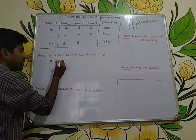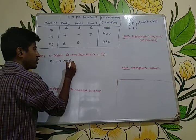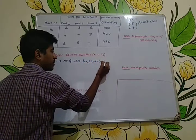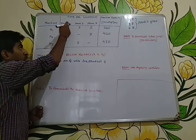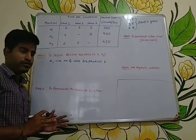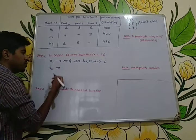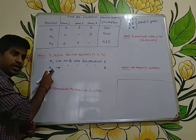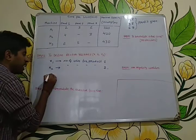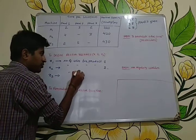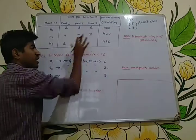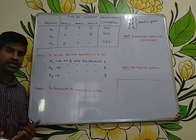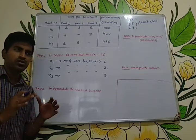Let x1 be the number of units for product 1 — we need to find how many quantities of product 1 to manufacture and sell to get a profit. Let x2 be the number of units for product 2, and x3 be the number of units for product 3. So there are three products, hence the decision variables are x1, x2, and x3.